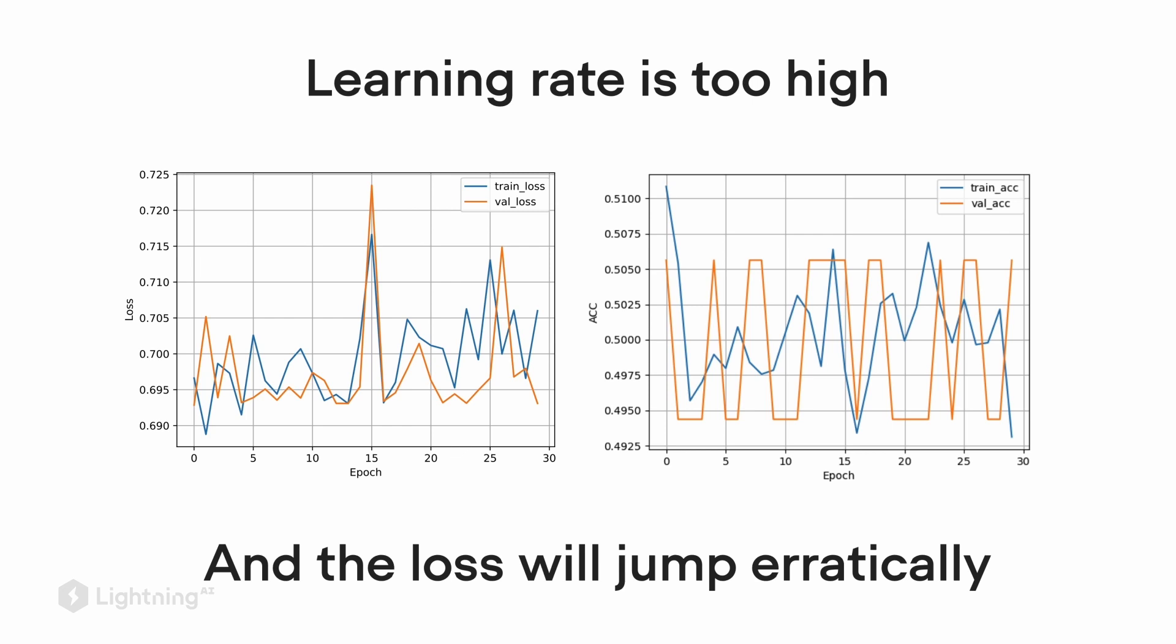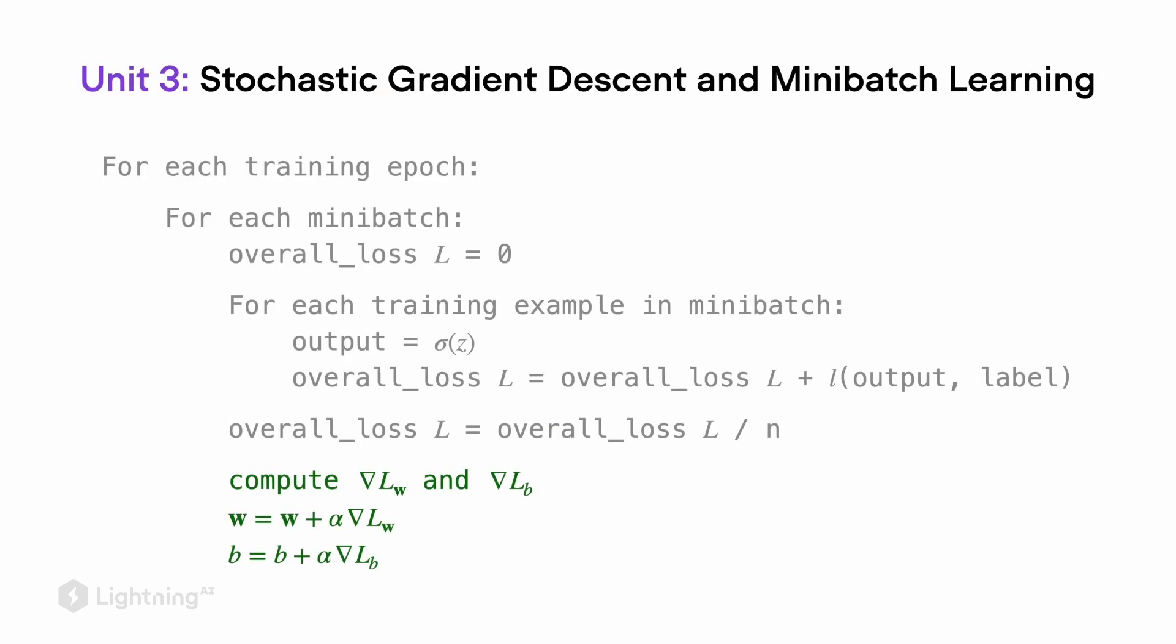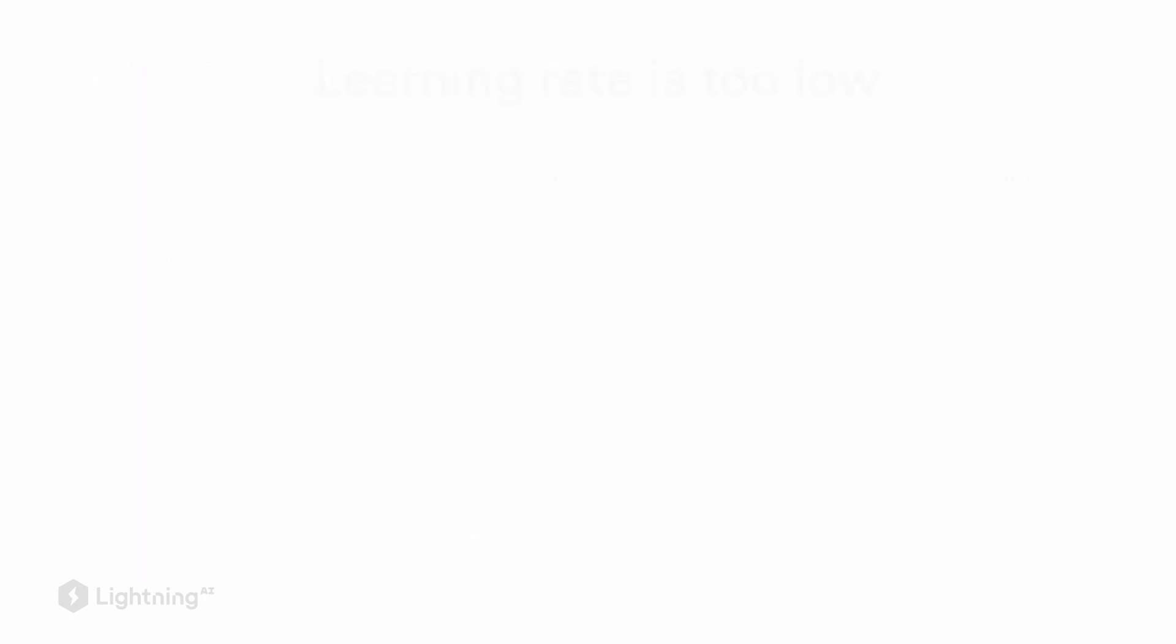So now if our learning rate is too low, our weight updates will be way too small, and the network will either take forever to learn, or it will not learn at all, because it will get stuck in a local minimum.